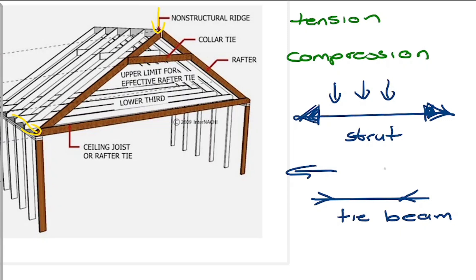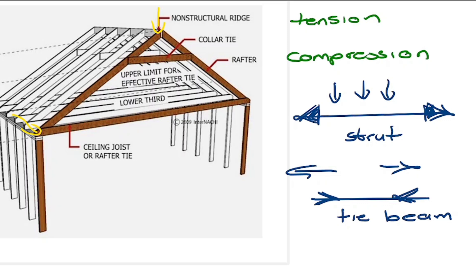These arrow conventions will become important later on. Basically, what will be required is to calculate the forces that each member is able to withstand — so that the structure is stable and the building is safe. There are two methods to determine these forces: an analytical method and a graphical method.